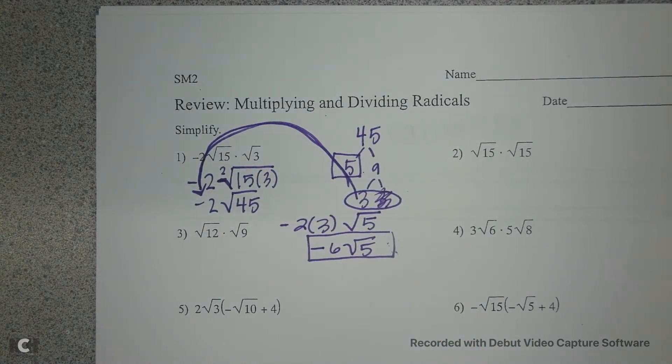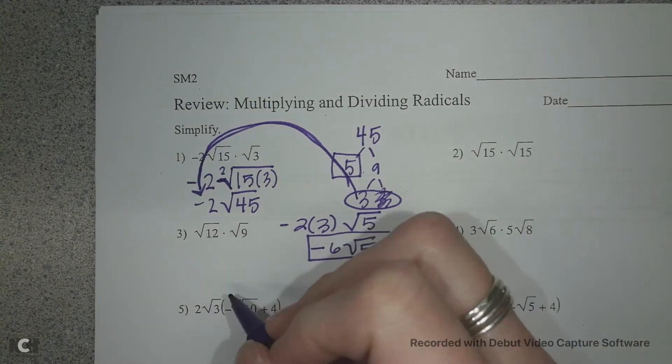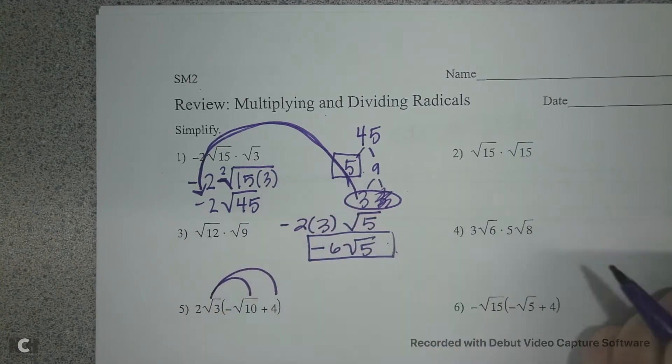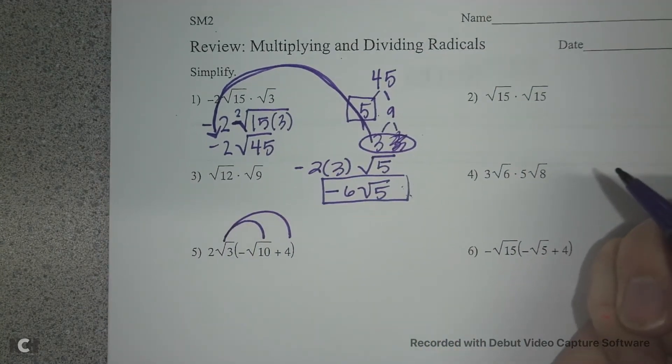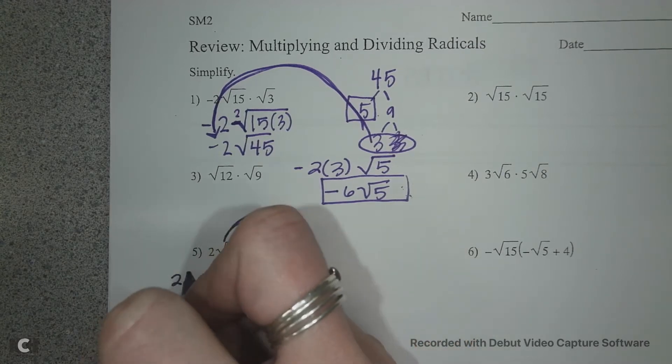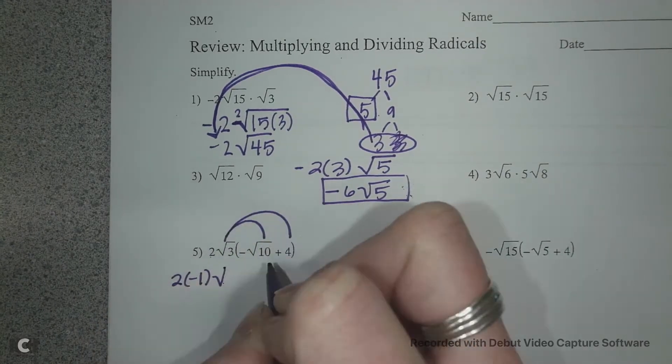The same thing happens on number 5, but you have a distribution problem. So you're going to distribute this radical to both things on the inside of your parentheses. I'm going to multiply my leading coefficients, so I have 2 times negative 1.